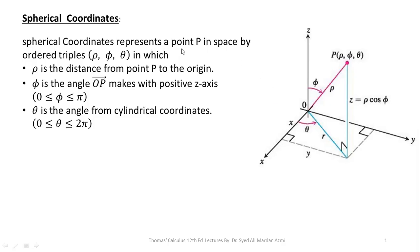Spherical coordinates represent a point P in space by the ordered triplet rho, phi, and theta, in which rho is the distance of the point P from the origin, phi is the angle that the line OP makes with the positive z-axis, and theta is the angle from the cylindrical coordinates.